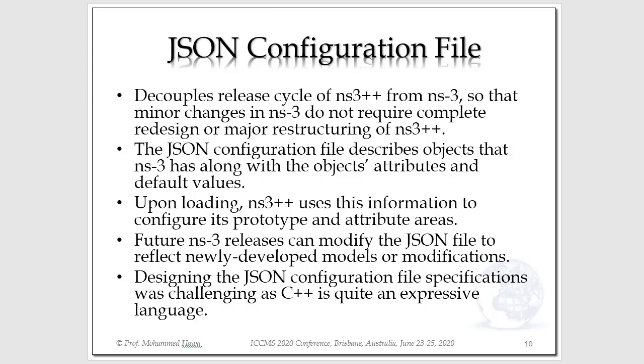When we designed NS3++, we did not want a rigid design because we were aware that NS3 will keep improving. New models will be added, modifications will be introduced, and we did not want to keep changing or restructuring NS3++. That's why we put a sort of glue or interface between NS3++ and the NS3 simulator, which is the JSON configuration file. The JSON configuration file describes the objects that NS3 uses and the attributes for those objects and the default values. When NS3++ loads, it reads the configuration file, which describes how NS3 behaves. Hence, if NS3 team releases a new version of their network simulator, then all is needed from the NS3 community is to modify the JSON file accordingly, and then we read that JSON file into NS3++, and this way we read those modifications into the graphical interface.